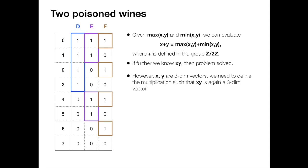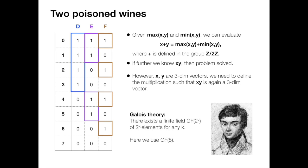So here comes an extremely beautiful mathematical theory, which is first developed by a French mathematician Évariste Galois. According to Galois theory, there exists a finite field of 2 to the k elements for any k. This field is usually denoted as GF, which refers to Galois field.